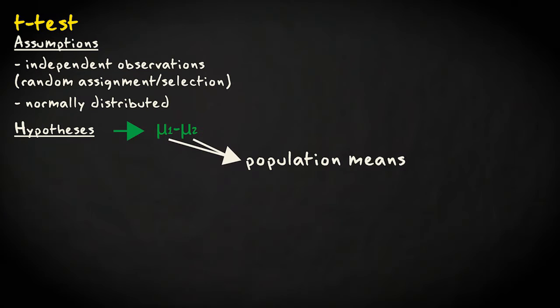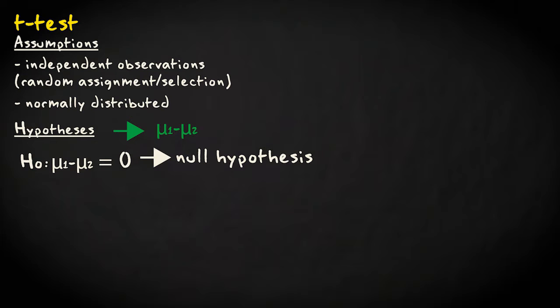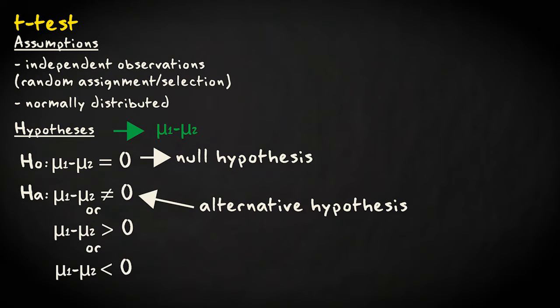The statistical hypotheses are expressed in terms of the difference between the population means mu1 and mu2. If both groups form the same population, the difference will be zero. This is the null hypothesis. Possible alternative hypotheses are that the difference is not zero, or that the difference is greater or smaller than zero.